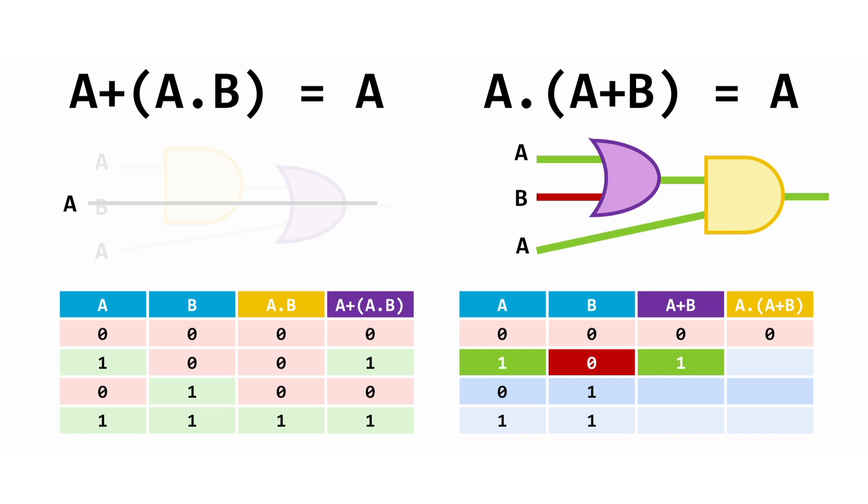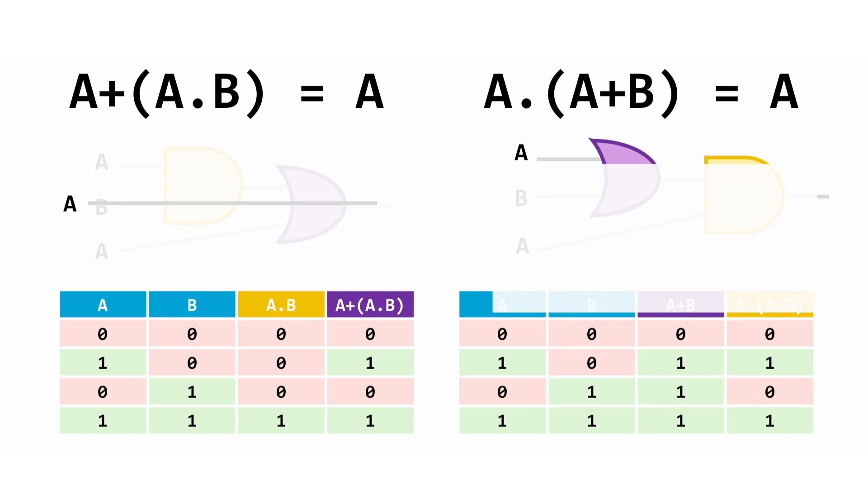When A is off, we can see that regardless of what happens with the OR gate, the AND gate can't produce anything other than a zero. And then finally, when both are on, we have an embarrassment of ones coming through, giving us a one as the output. Again, the final column and the A column are now identical, so boom, it's just A.